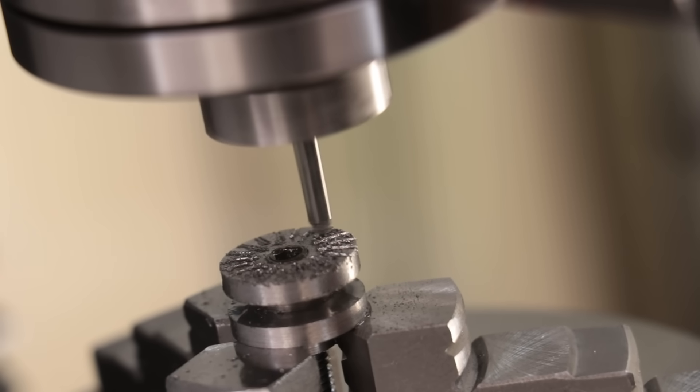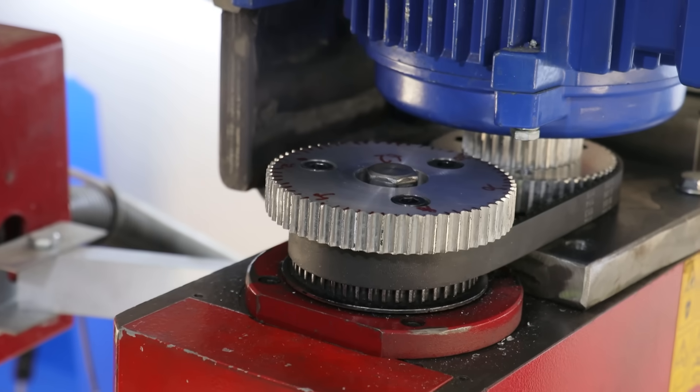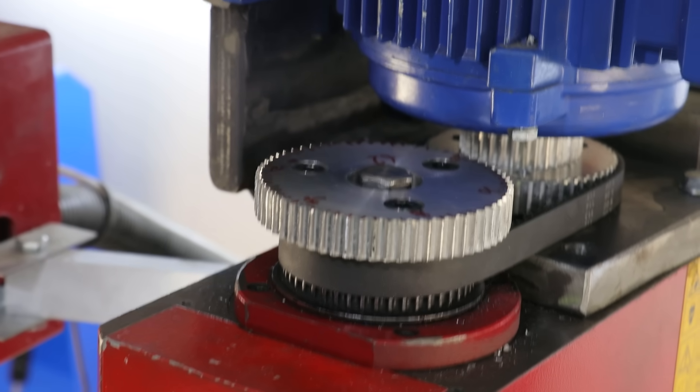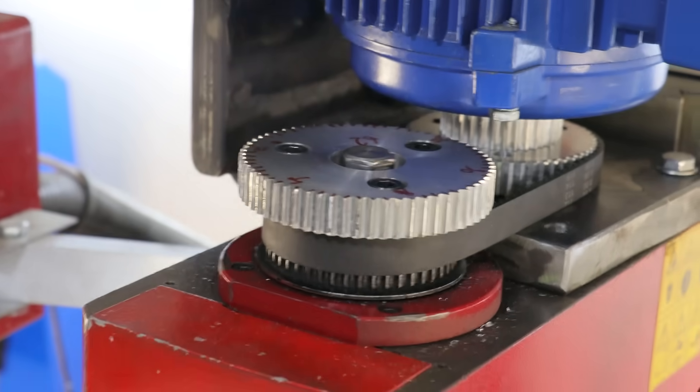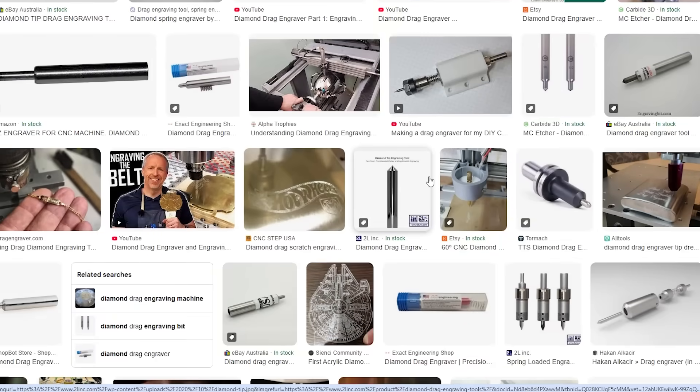Back when I used to run a CNC mill, I used to use similar end mills, and I'd be running them at about 12,000. Even though I currently have a high-speed pulley setup, I don't think I'd be able to achieve even half of that. Thankfully though, there are other methods, and the one I want to take a look at today is drag engraving.